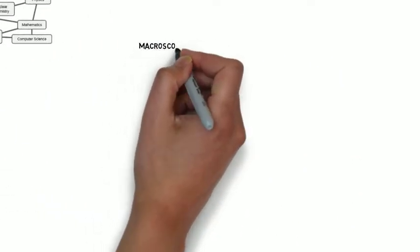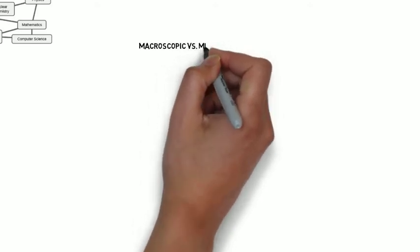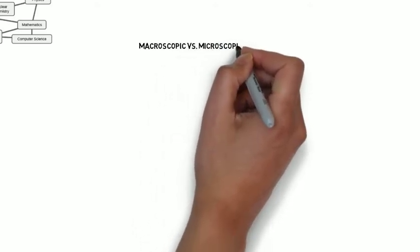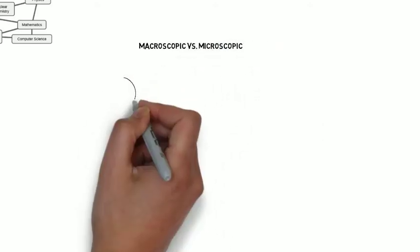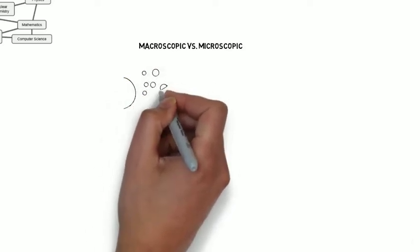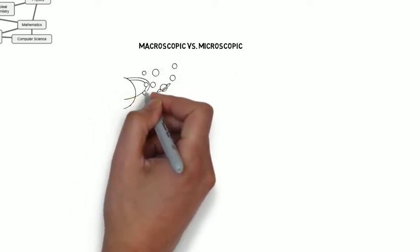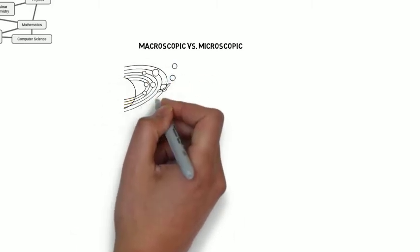A couple other definitions here. We have macroscopic versus microscopic. The macroscopic world refers to the things that you can see with your own eyes, large-scale objects, including solar systems.